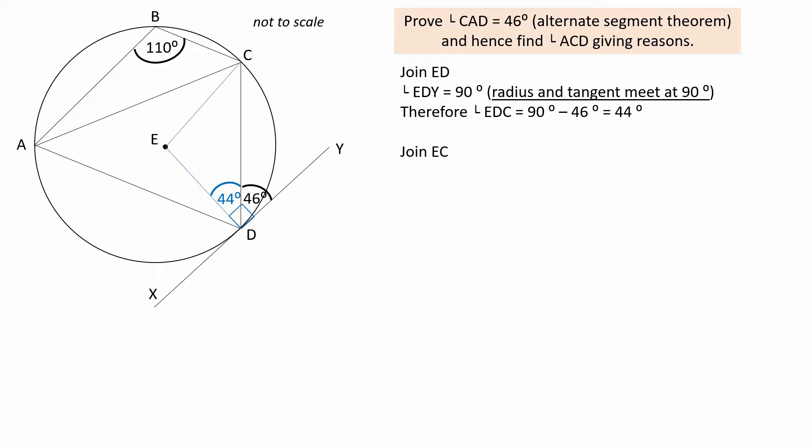Now draw the radius EC to form an isosceles triangle CED. The angle DCE equals angle CDE, which is 44 degrees.